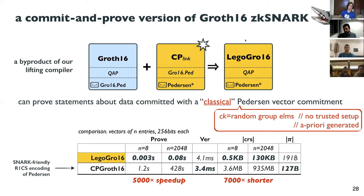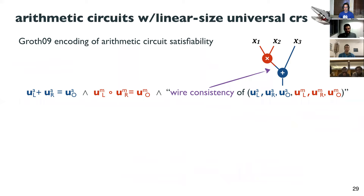A note from the host: it's fine to keep going, but since some people blocked out an hour and may need to leave, anyone wanting to ask a question should jump in. The second application is using the Lego SNARKs approach to build ZK-SNARKs for arithmetic circuit satisfiability that support a linear-size universal CRS.